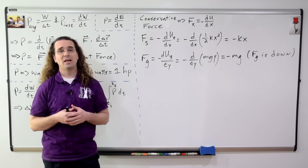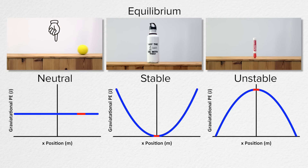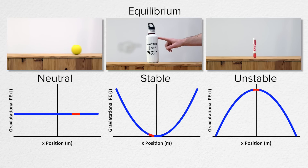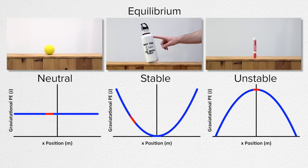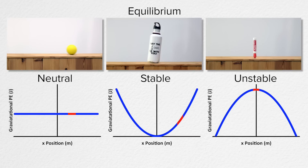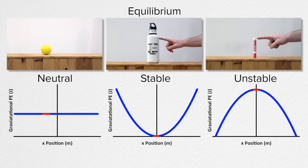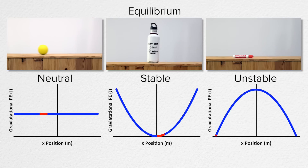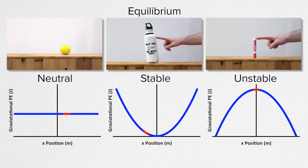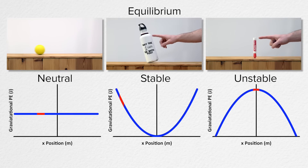Now let's talk about neutral, stable, and unstable equilibrium. A ball on a flat surface is in neutral equilibrium because its gravitational potential energy remains constant regardless of position — the graph of PE versus position is a horizontal line. A water bottle standing upright is in stable equilibrium because its gravitational potential energy increases as position moves away from equilibrium, so it naturally returns to equilibrium. A dry erase marker balanced on its cap is in unstable equilibrium because its gravitational potential energy decreases as position moves away from equilibrium, so it naturally moves away from equilibrium.